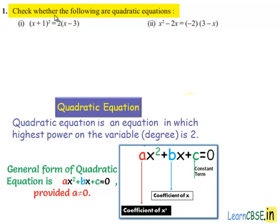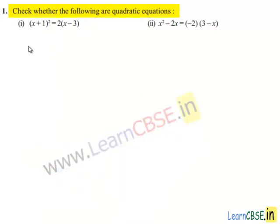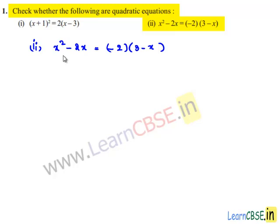Coming to the first problem: check whether the following are quadratic equations. Now coming to the second bit, which is x squared minus 2x equals minus 2 times of (3 minus x). On the left hand side we have x squared minus 2x, and on the right hand side we have minus 2 times of (3 minus x), which gives minus 6 plus 2x.